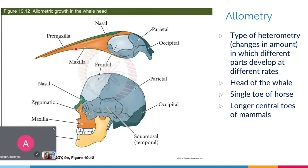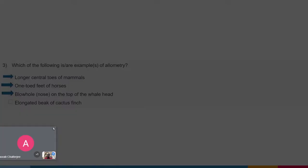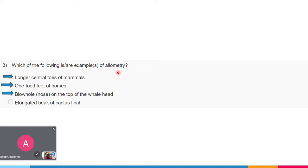Similarly, the single toe of horses is an allometric change: the middle toe grew so much faster compared to the others that only one toe is now visible. In case of mammals, the central toe grows at a faster rate and is thus longer than other fingers or toes. The correct examples of allometry are: longer central toe of mammals, one-toed feet of horses, and the blowhole or nose on top of whale head. The elongated beak of the cactus finch does not qualify — it is a different kind of heterometric change, but not allometry.